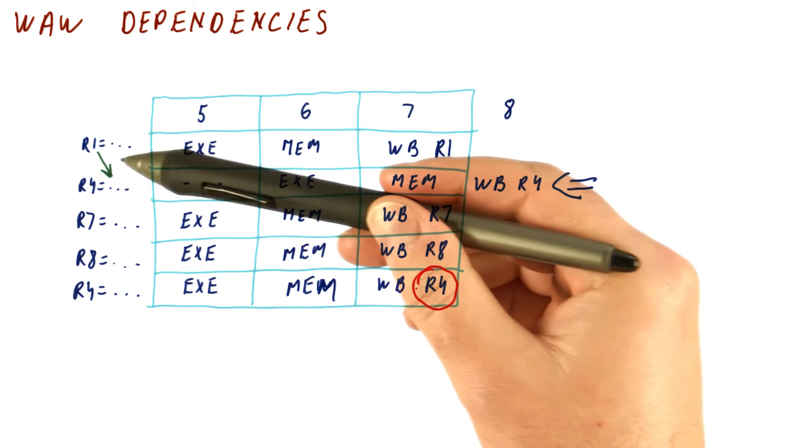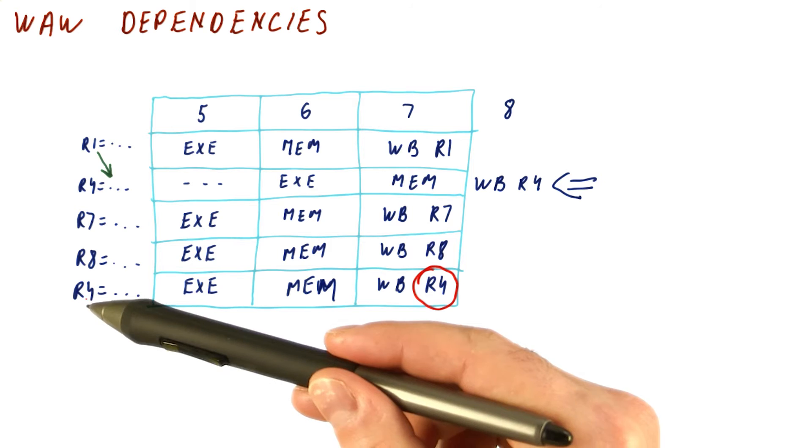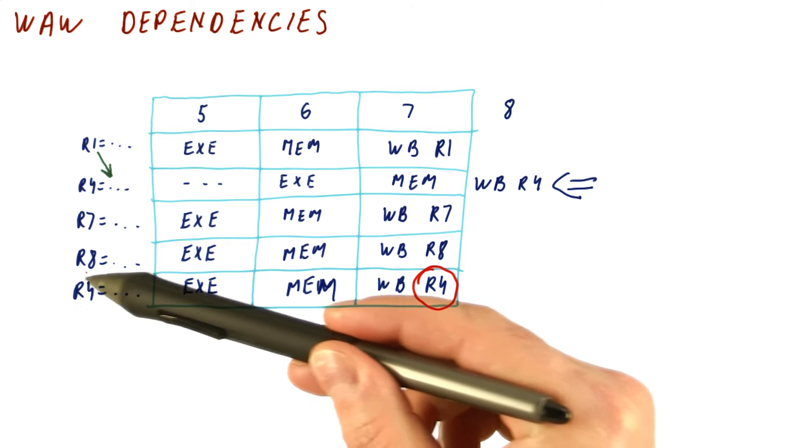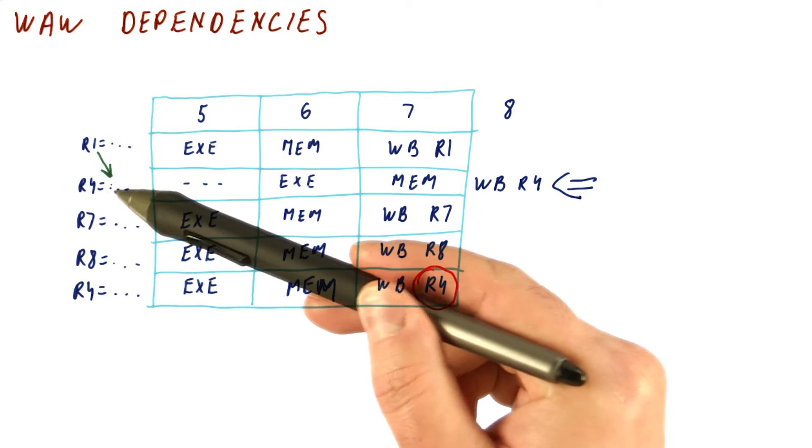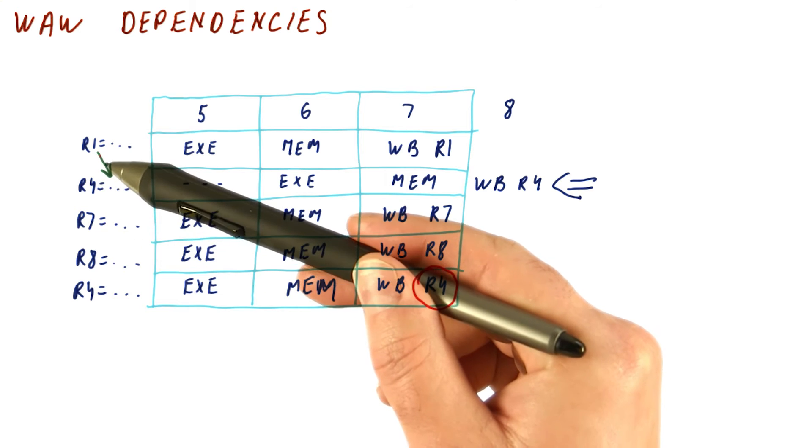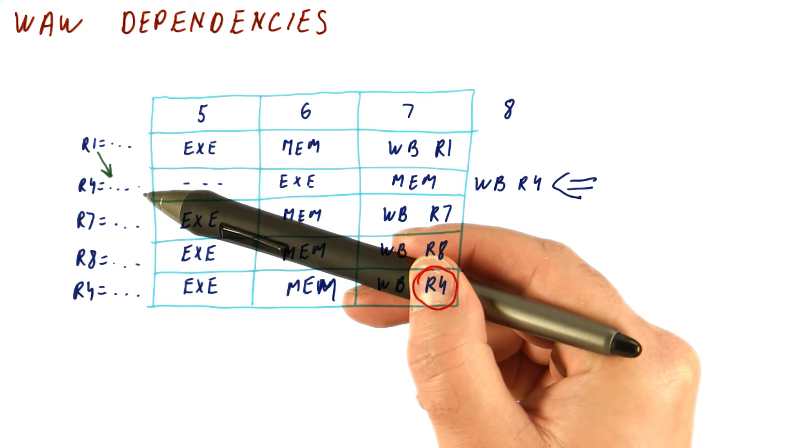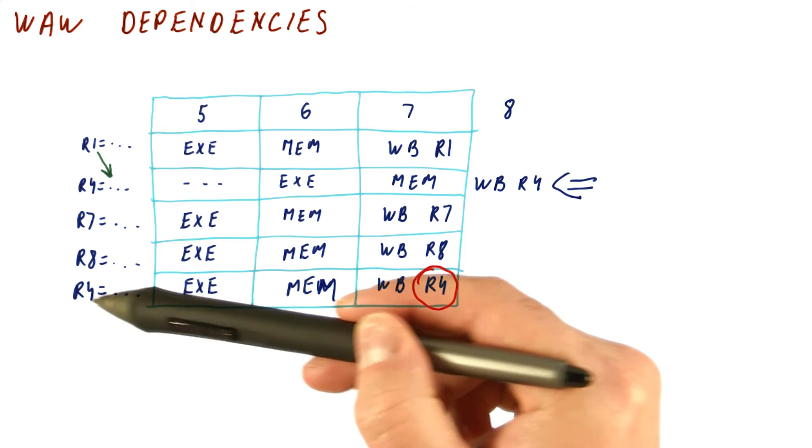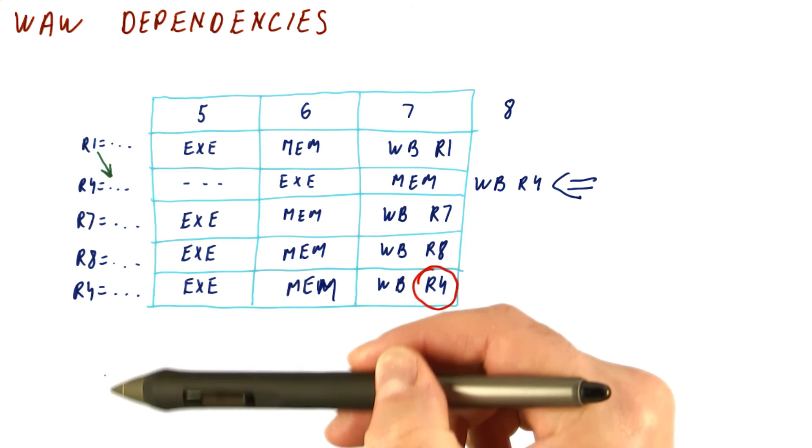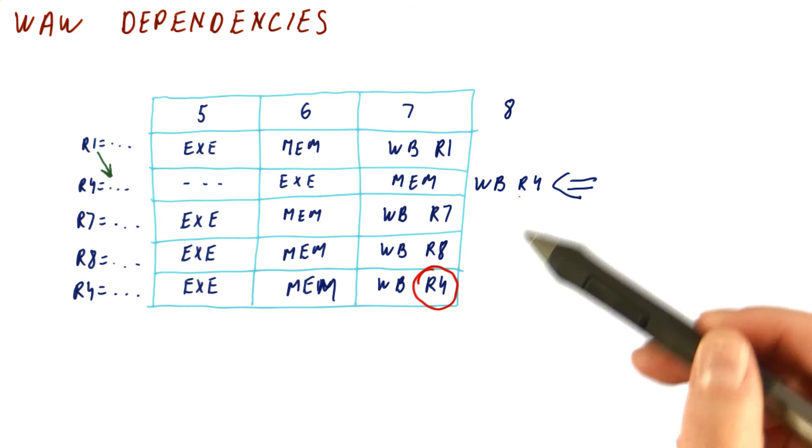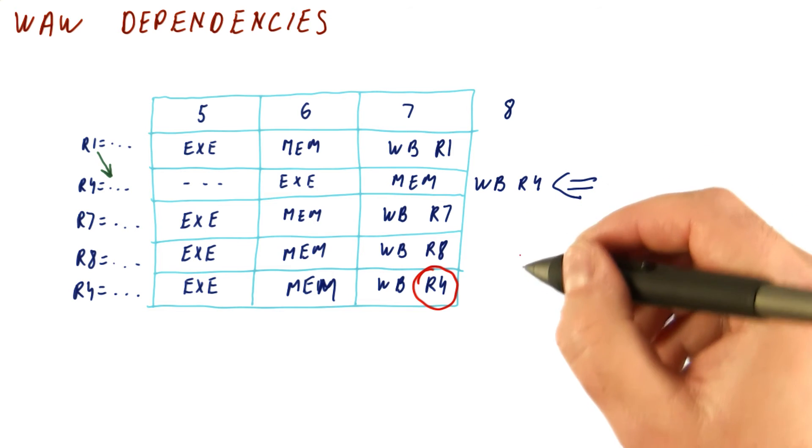Because when the programmer wrote this, they wrote it this way, so they would expect that R4 would retain the value from this fifth instruction, not from the second instruction. So basically, the programmer wanted this to become temporarily this, but then take a new value here. And that's kind of the last value after these five instructions. But that didn't happen. So that's a problem.